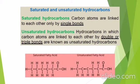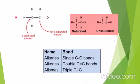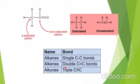A carbon sharing a single bond is a saturated carbon, while a carbon sharing a double bond is an unsaturated carbon. When carbon atoms have a single bond between them they are known as alkanes, when they have a double bond between them they are known as alkenes, and when they have a triple bond between them they are known as alkynes.